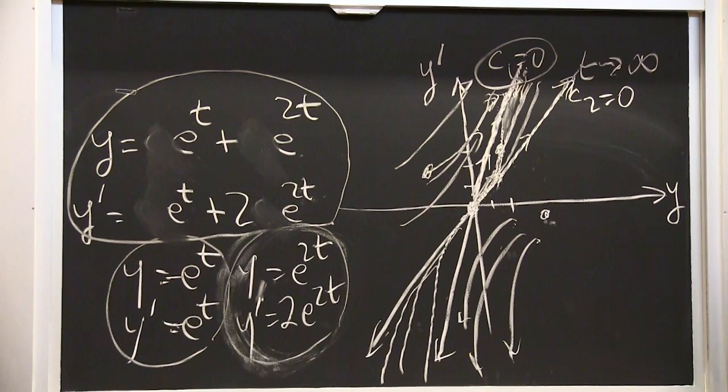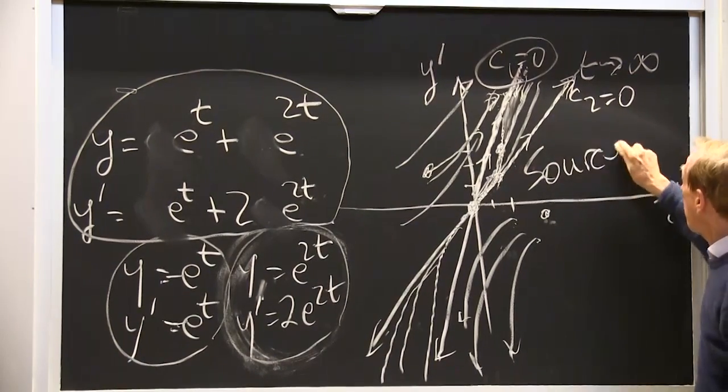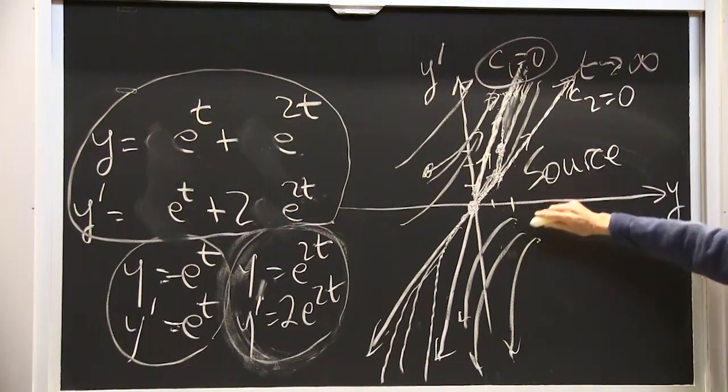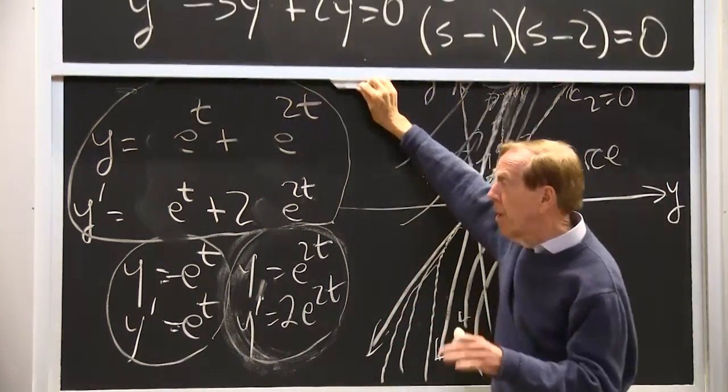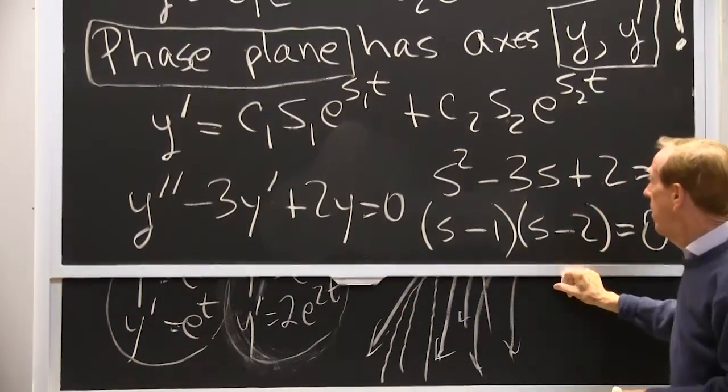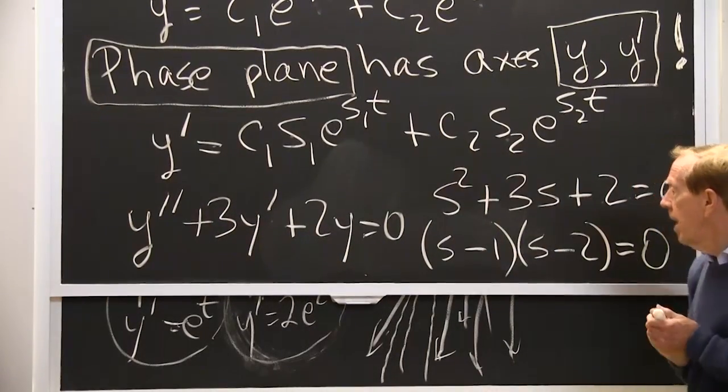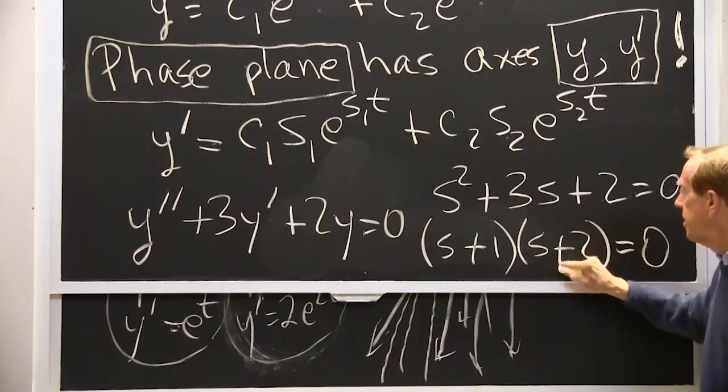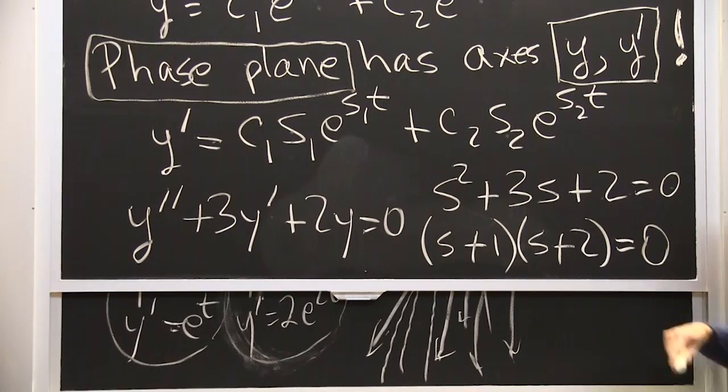May I do one more example to show that this was a source. This is called a source because the solution goes to infinity. Wherever you start, the solution goes to infinity. It's unstable, totally unstable. Now if I change to a positive damping, then I would have a plus sign there. These would be plus signs. I would have s equal minus 1 or s equal minus 2. So with positive damping, I damp out.